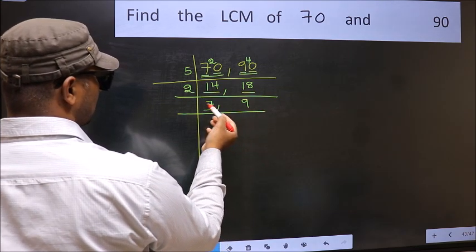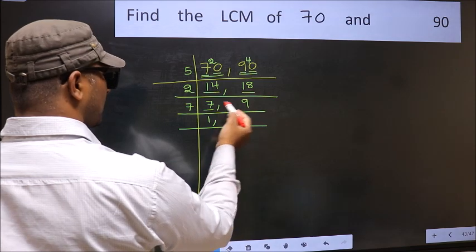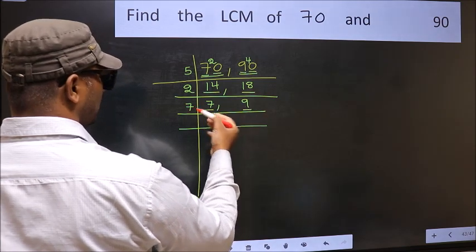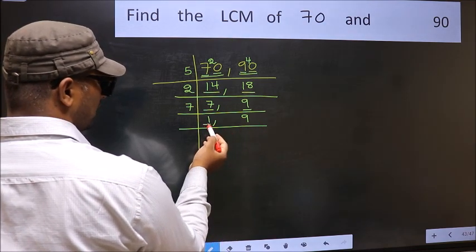Now we have 7. 7 is a prime number, so 7, 1, 7. The other number 9, not divisible by 7, so you write it down as it is.